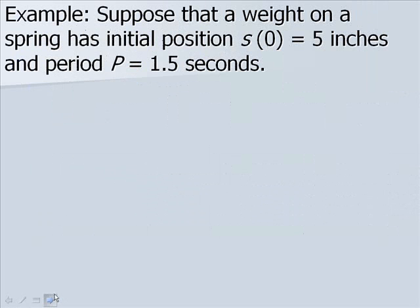Let's look at an example. Suppose that a weight on a spring has initial position S of 0 equal to 5 inches, and period P equal to 1.5 seconds. Our initial position is where we've pulled down our weight. So it's that lower point below the equilibrium point.